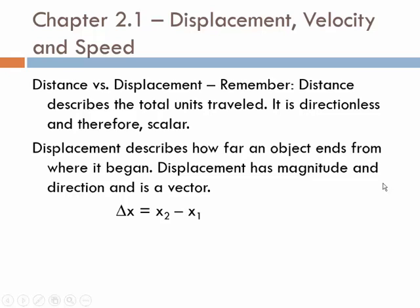The first thing we need to discuss is the difference between distance and displacement, and velocity and speed. Distance describes the total distance that you travel, and it's a scalar quantity. It doesn't describe the direction that you went. Displacement, however, does have a direction attached to it and describes how far you ended up from where you started. So it has magnitude and direction, so displacement is a vector, distance is a scalar.